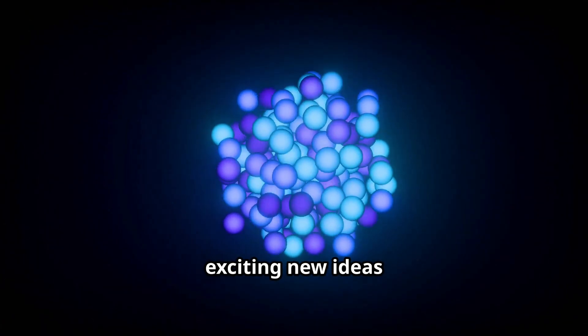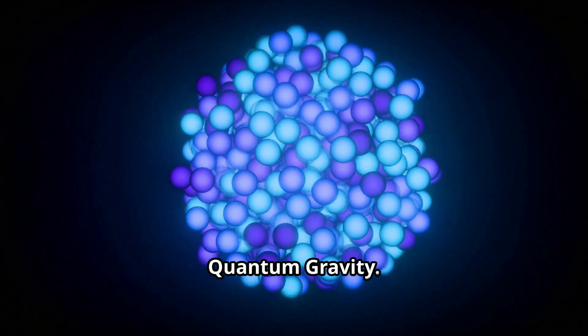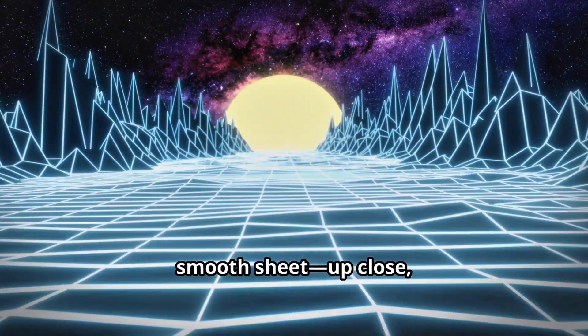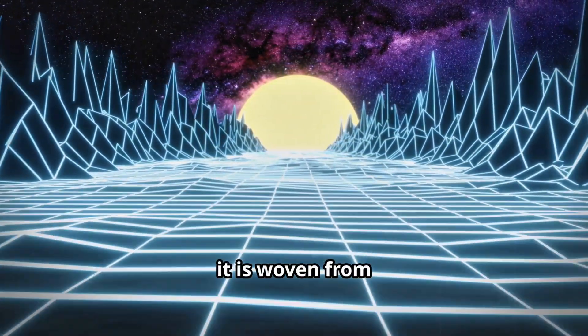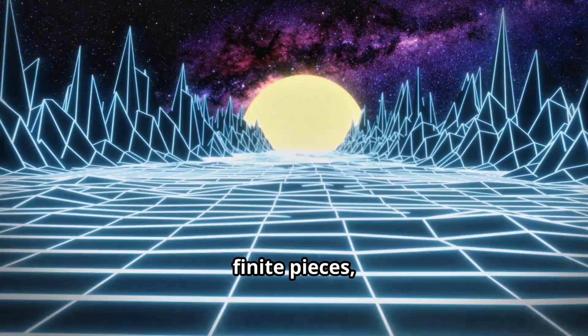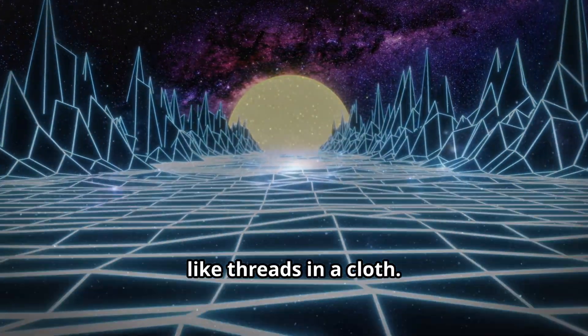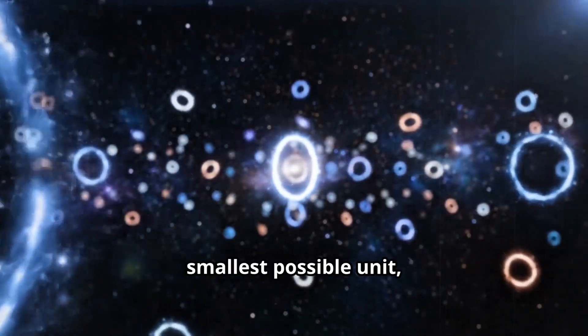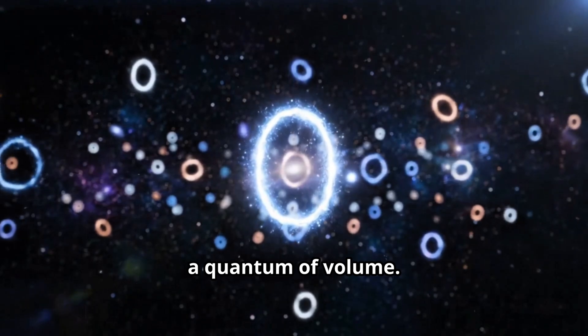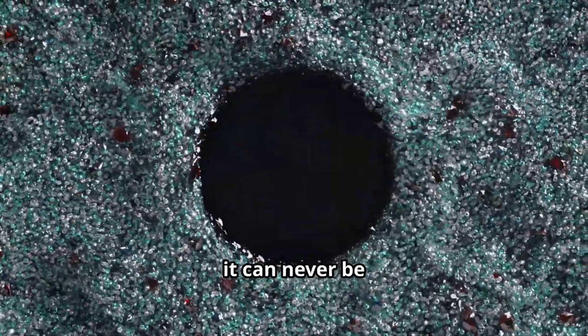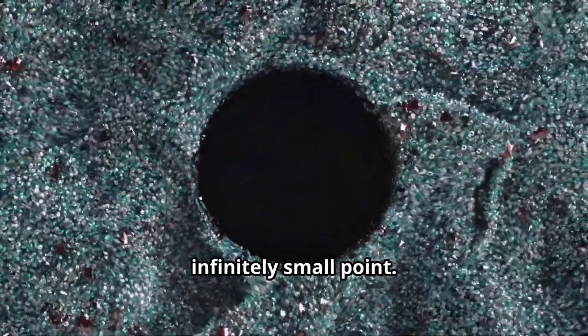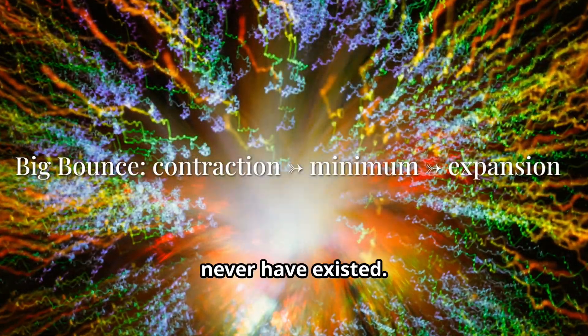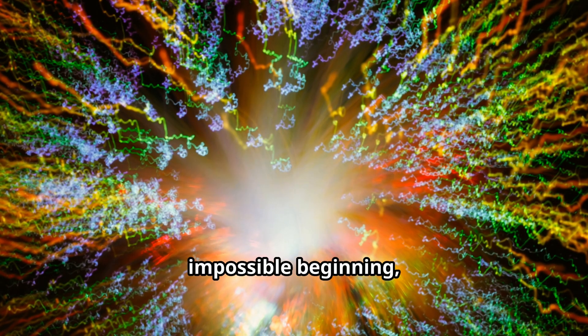One of the most exciting new ideas comes from loop quantum gravity. This theory reimagines the fabric of space. Space is not a smooth sheet - up close, it is woven from incredibly small, finite pieces, like threads in a cloth. In this view, space is made of tiny indivisible loops. There is a smallest possible unit, a quantum of volume. If space is granular, it can never be compressed to an infinitely small point. There is a physical limit to density. This means the singularity may never have existed.